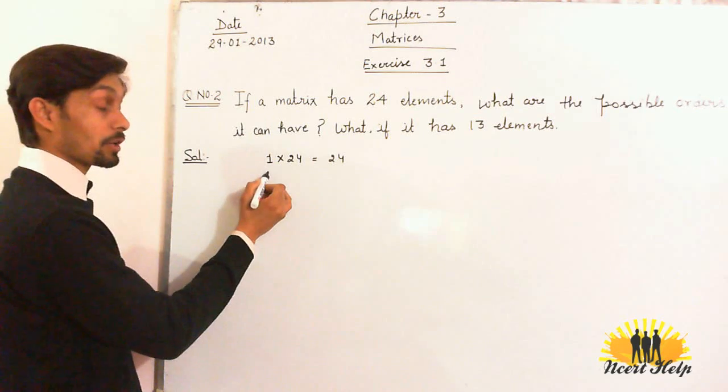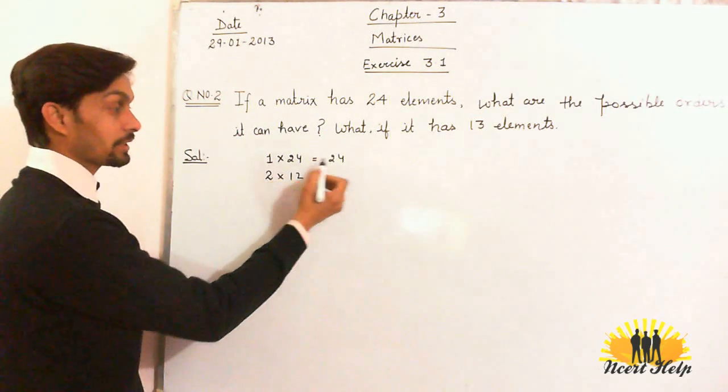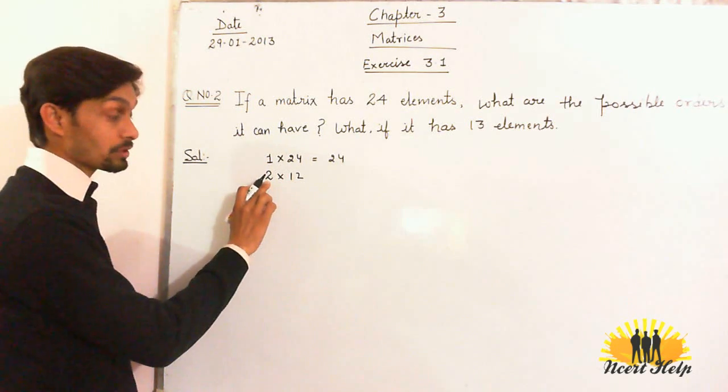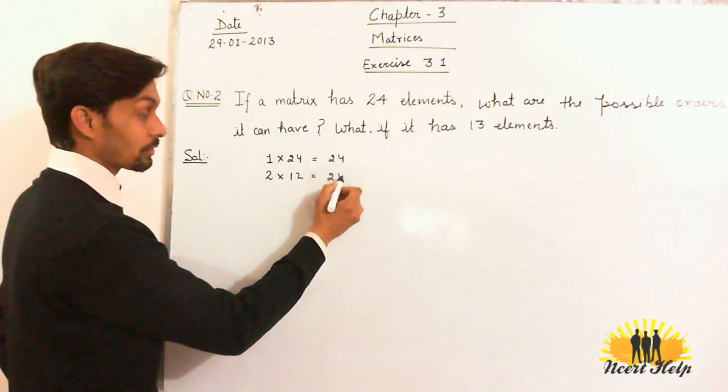Another possible order may be 2 into 12. Divide 24 by 2. There are 2 rows and 12 columns. Similarly, you will get 24.